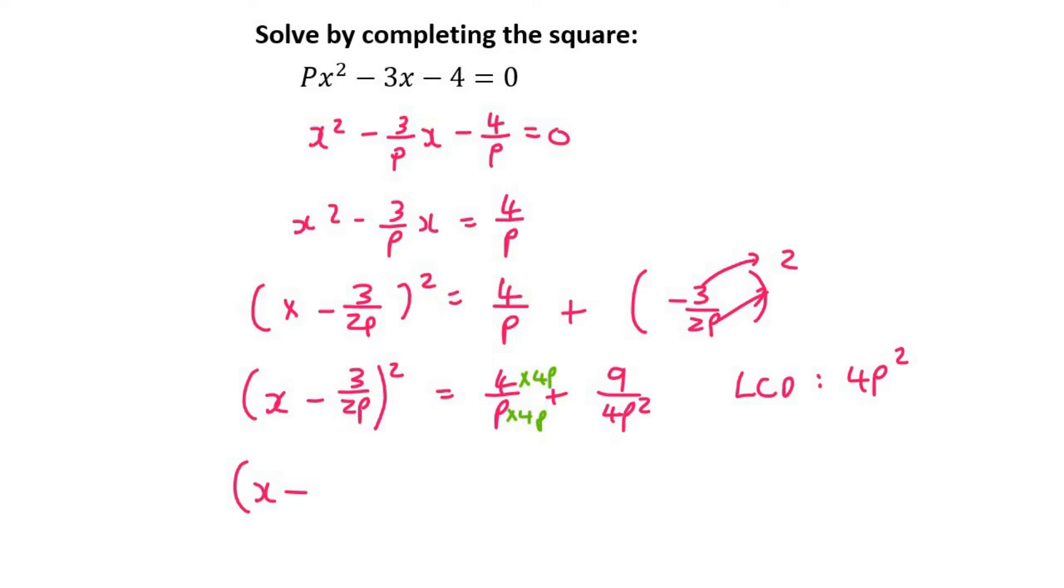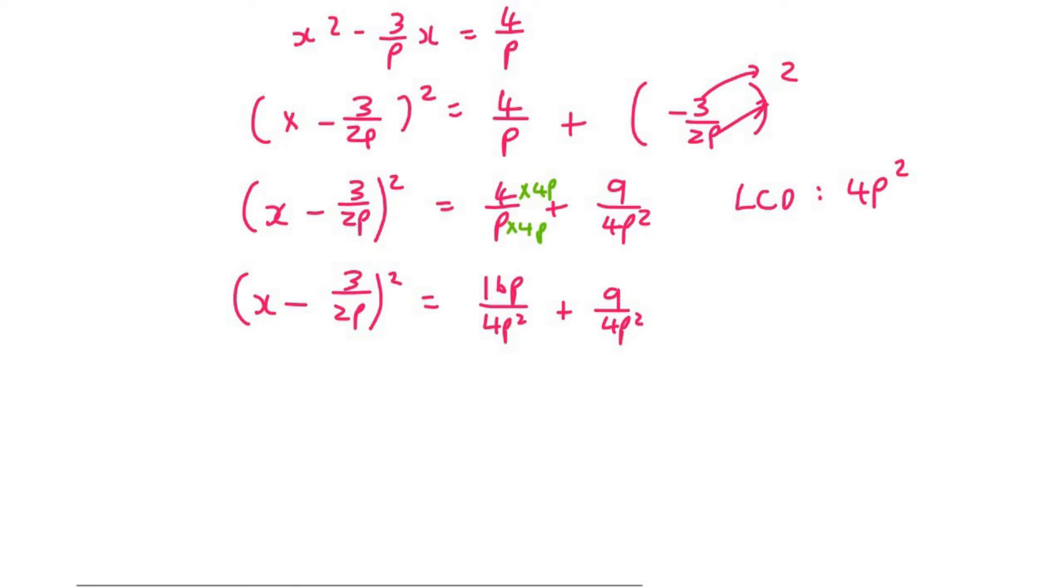And so then going into our next line, you're going to end up with 16p over 4p squared plus 9 over 4p squared. So now we can put those two together. So that gives us 16p plus 9 over 4p squared.